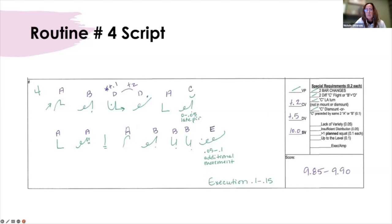The next deduction occurs on the dismount where she does a double a and her chest is forward. She has maybe a little bit of a swing of an arm. She did stick the landing, so this is where the additional movement to maintain balance comes in, so 0.05 to 0.1 in the additional movement. So overall her execution is 0.1 to 0.15. The score range 9.85 to 99 with the average score of a 9875.